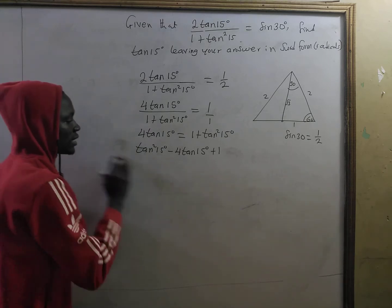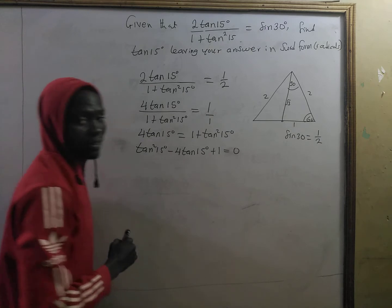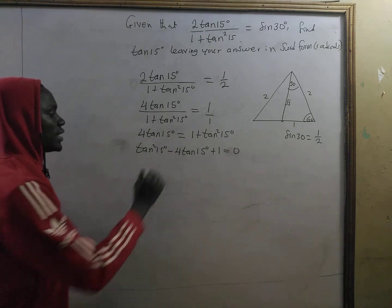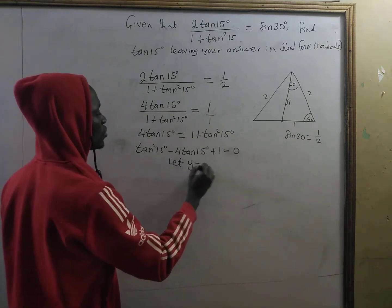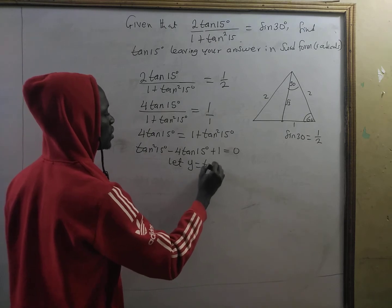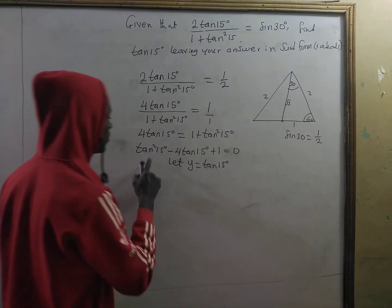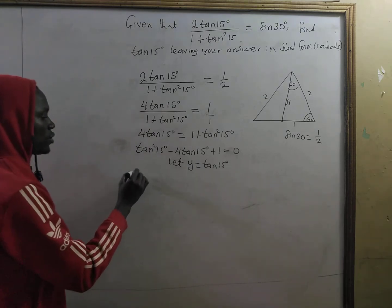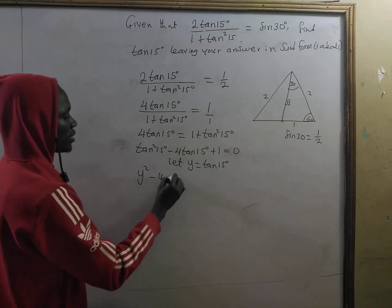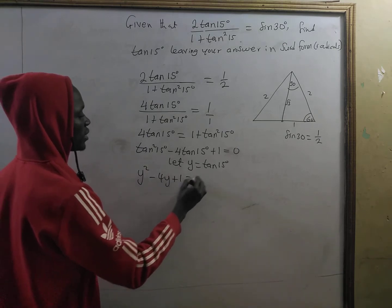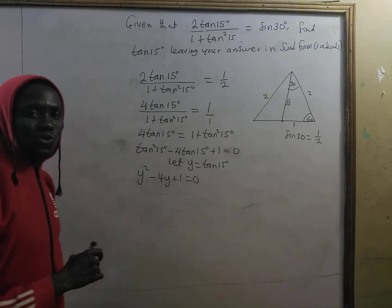Now if we let y equal to tangent of 15 degrees, then we have y squared minus four y plus one is equal to zero, and this is a quadratic equation.